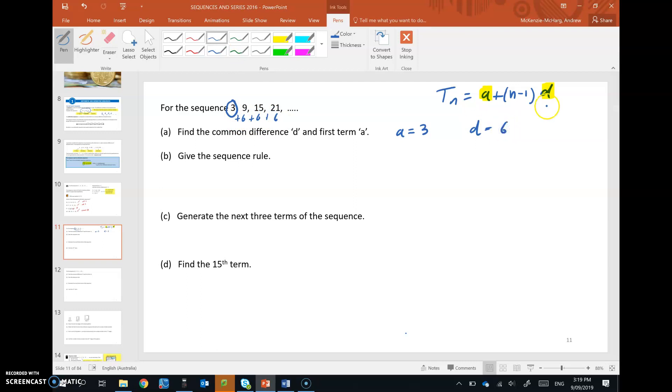So if we write down the sequence rule just by putting those values in, then we get tn equals 3 plus n take 1 times 6. Now, we want you to expand and simplify this. We can't just leave it like this in this form. We need to multiply out the brackets, then bring together like terms. So you might want to pause the video and try that on your own, and then I'll show you what to do.